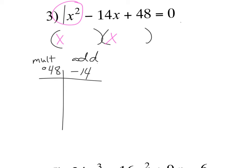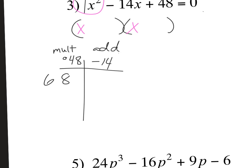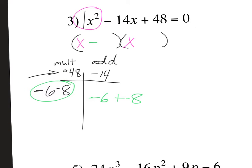We're multiplying to get 48. Six and eight is 48 — not six and seven. Are they negative or positive? Both negative, because negative times negative gives positive 48, and they sum to negative 14. Since a equals one, pop them in: x minus 6 and x minus 8. If we were only factoring we'd be done, but we have an equation, so we need to solve.